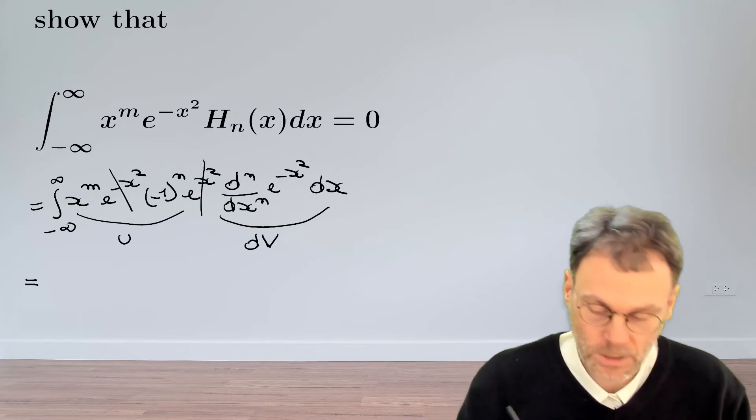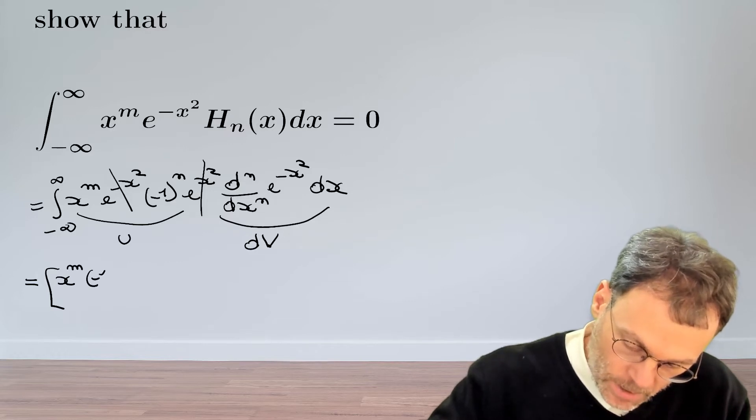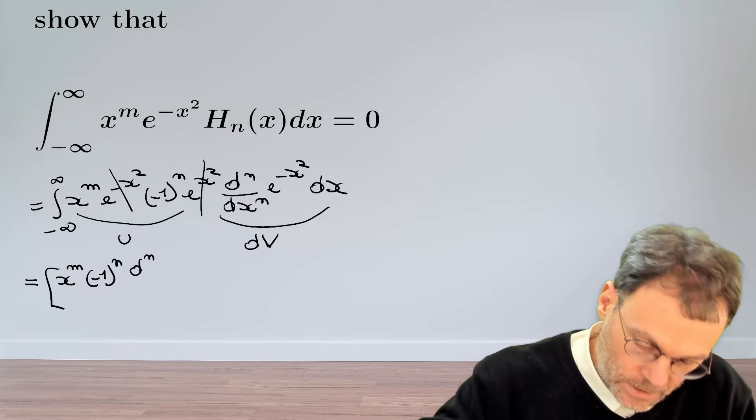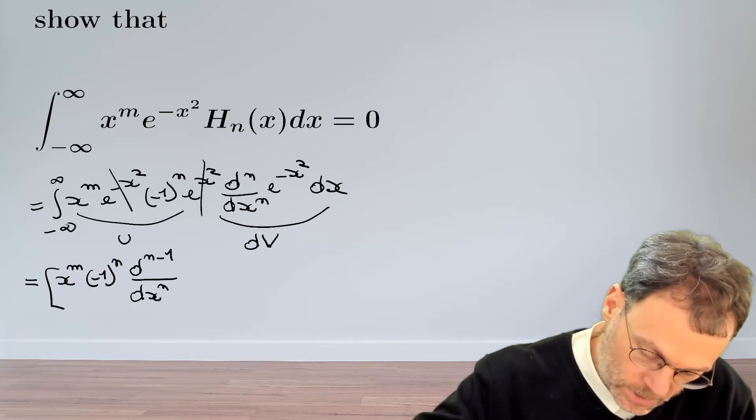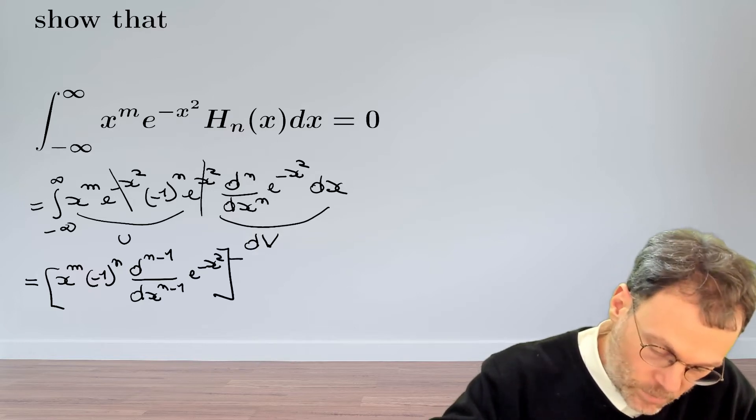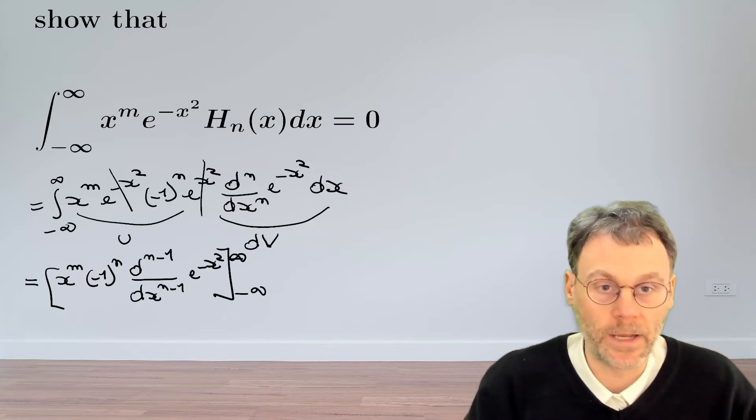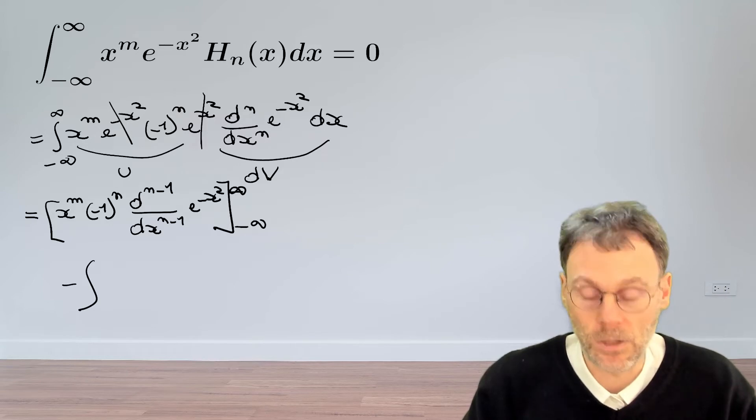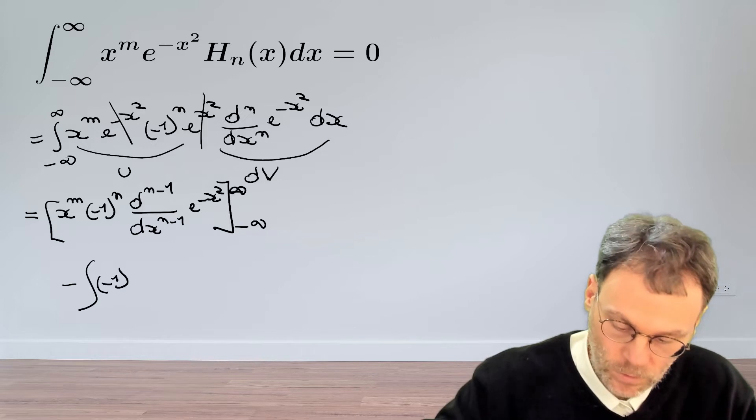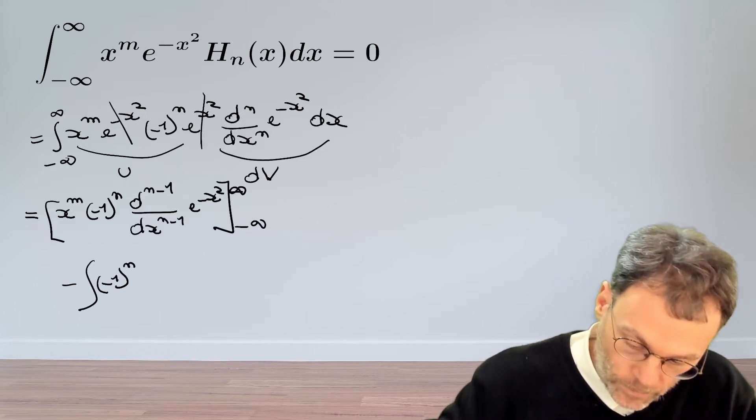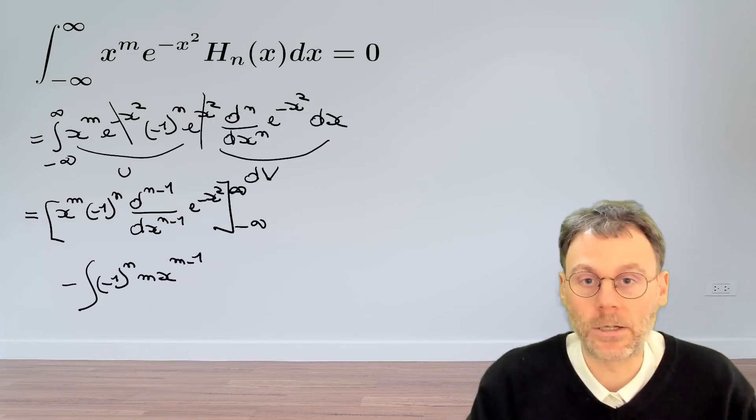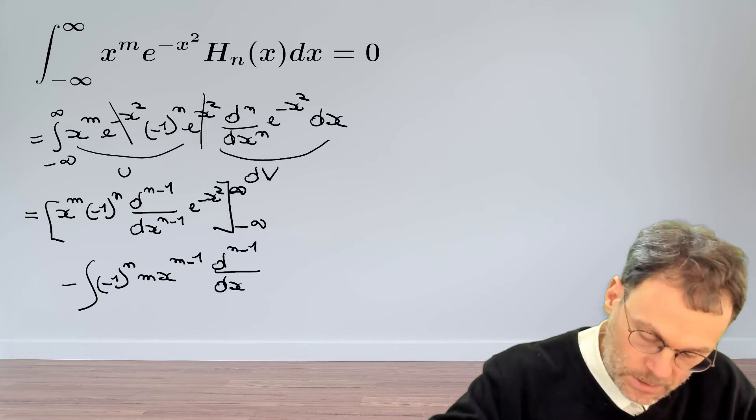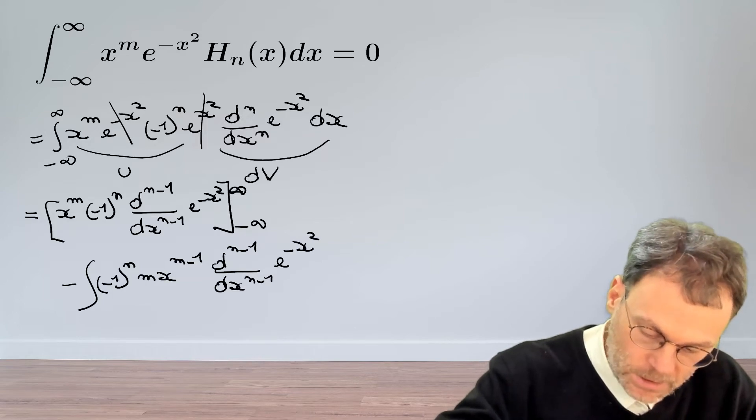Let's proceed. What we have then is u times v. So u is x to the power of m minus 1 to the power of n. And then for v, it's taking this derivative, as I already mentioned, n minus 1 times, as opposed to n times, exponential minus x squared. And then evaluating this between plus and minus infinity. That's the first term. Let's proceed to the second term. That's going to be minus the integral of v du. We take the derivative of u, so minus 1 to the power of n. And then taking the derivative of x to the power of m, that's going to be m, x to the power of m minus 1. And then we shouldn't forget v, of course, which is d n minus 1 dx n minus 1 of exponential minus x squared dx.